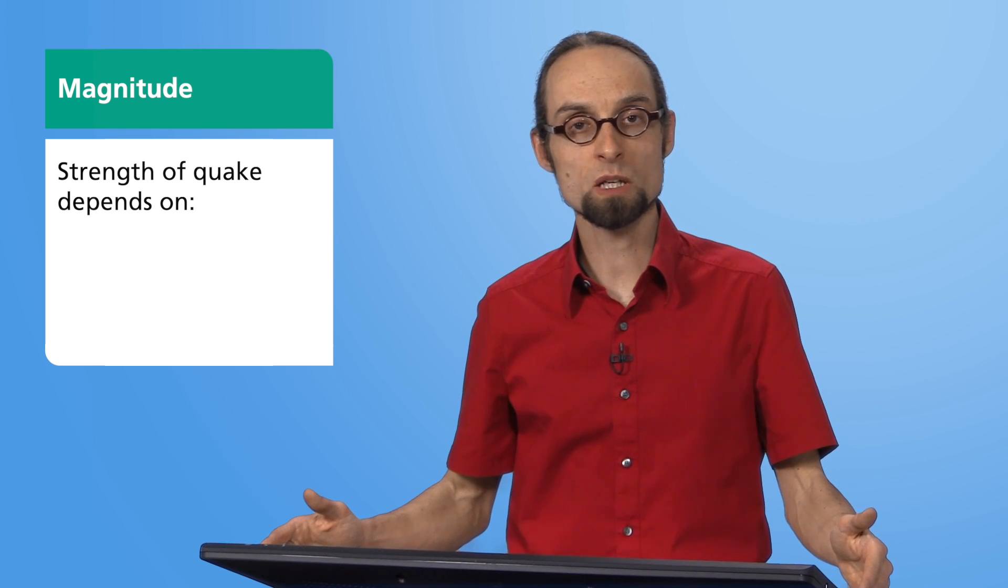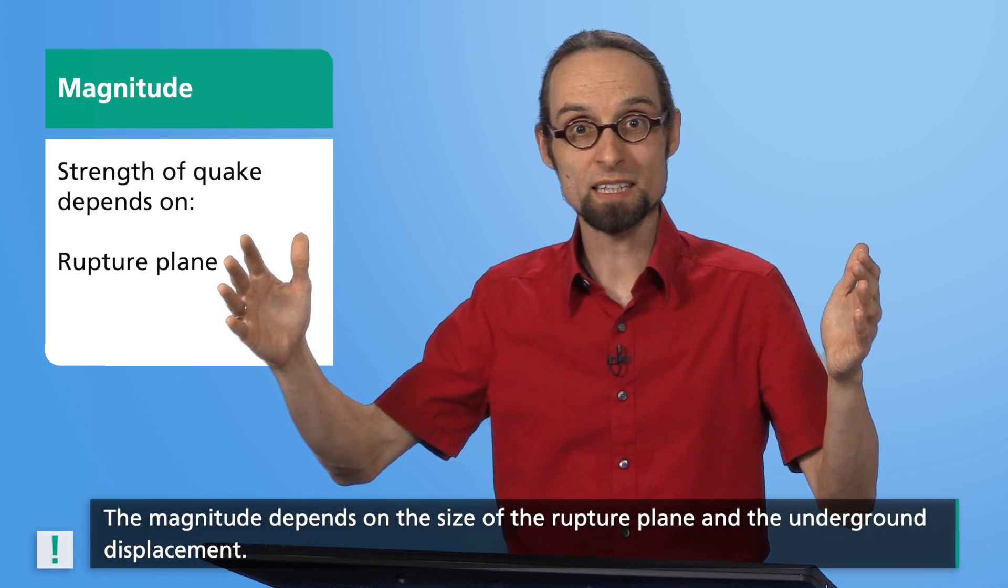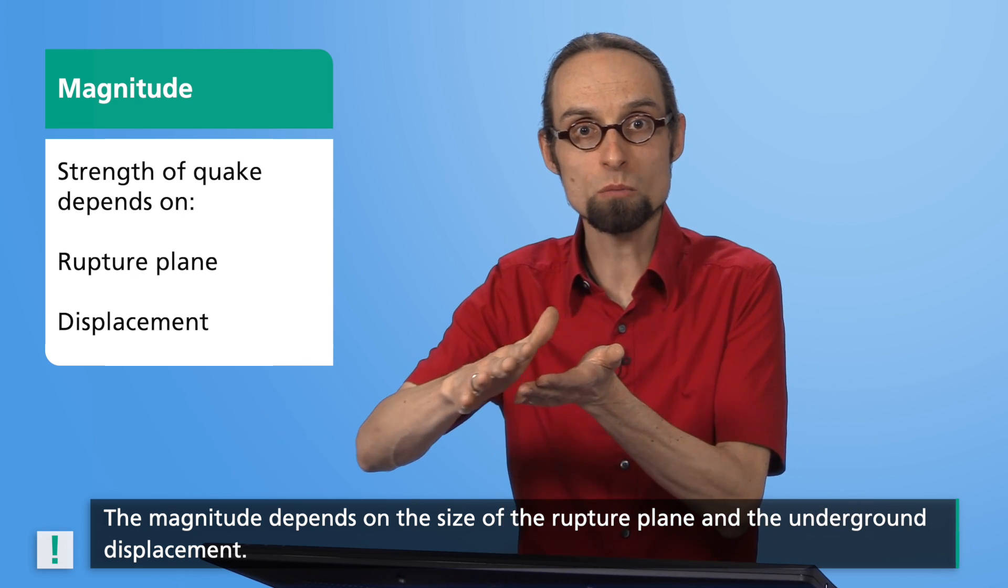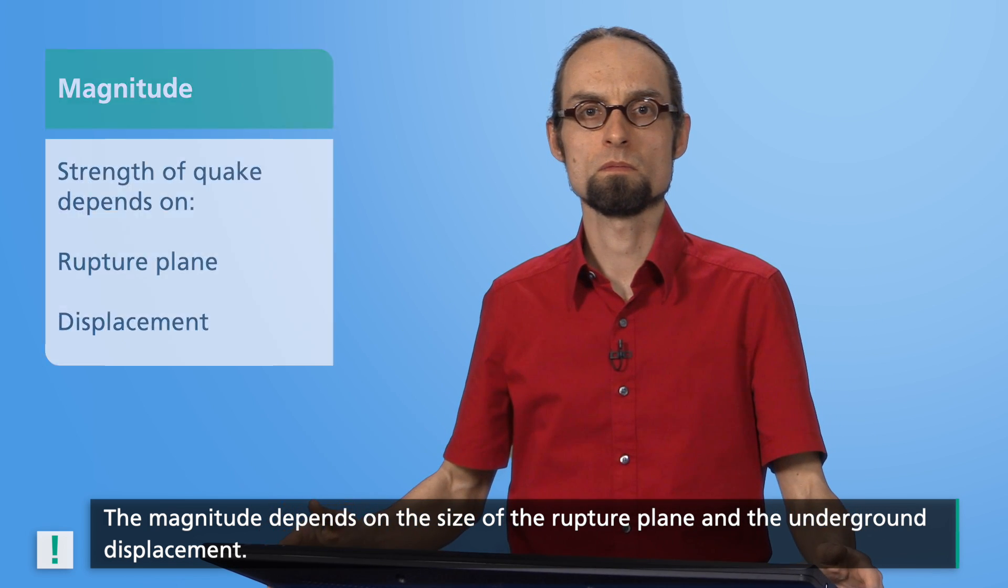Now, let's talk about magnitude. In seismology, magnitude describes the intensity of the earthquake underground. It depends on the size of the rupture plane and the extent of the displacement along it. In the media, such as our newspaper article, they often speak of the magnitude on the Richter scale, which is named after Charles Richter, who, together with Benno Gutenberg, developed this scale in the 1930s for describing earthquakes in California.